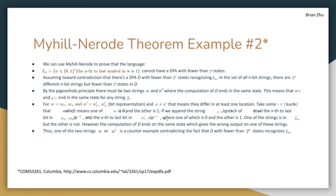By the pigeonhole principle, there must be two strings, let's call them W and W', where the computation of D ends in the same state. This means that Wz and W'z end in the same state for any string z.